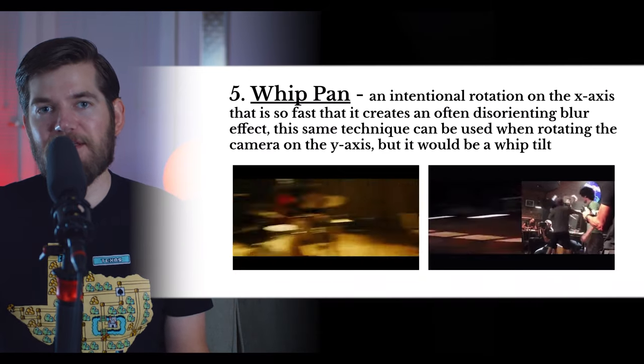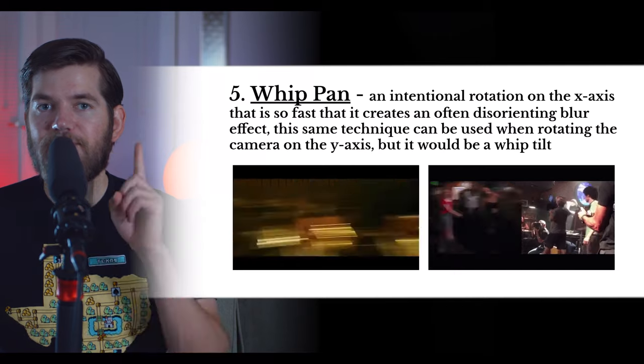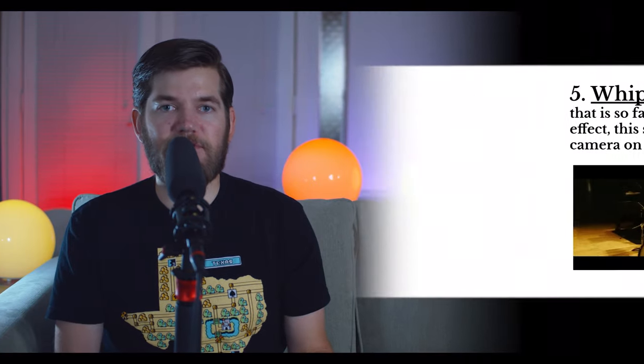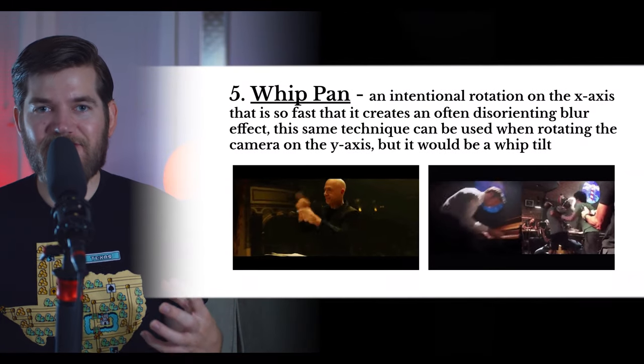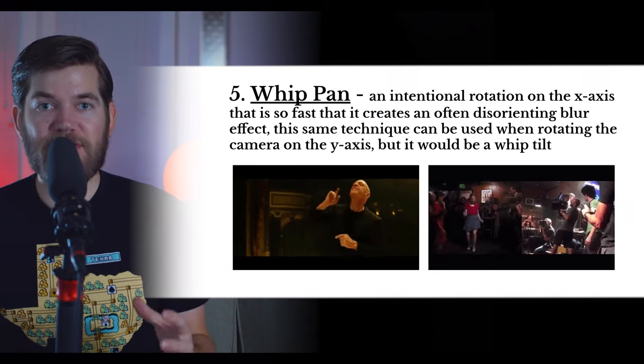You can also have a whip tilt, which is an extremely fast tilt that blurs the image. Remember the difference between a pan and a tilt. A novice filmmaker will confuse these terms and use them interchangeably, but you should not. Always use the term pan when you mean rotation from left to right or right to left, and always use tilt when you mean rotation down to up or up to down. The whip pan can add energy to a scene — in these examples we see high-tempo music scenes where the whip pan adds intensity.